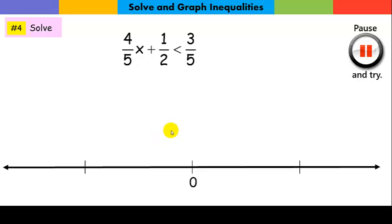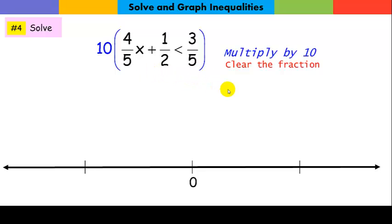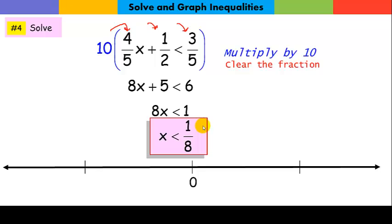For practice problem 4, we clear the denominators using the least common denominator of 10. Since we're multiplying by a positive number, the sense of the inequality doesn't change. To isolate x, we subtract 5 from both sides and divide by 8. The solution has a boundary point at positive 1 over 8. Since it says all x's less than that, the arrow goes to the left.